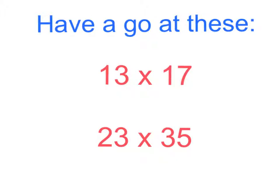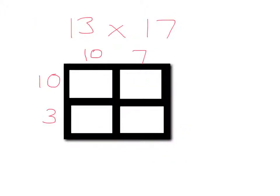Have a go at these questions and then pause the video. Full solutions will be shown in a minute. I have already partitioned these numbers to get 13 becoming 10 and 3 and then 17 becoming 10 and 7. So now I am multiplying in this box, 10 multiplied by 10, which gives me the answer 100.